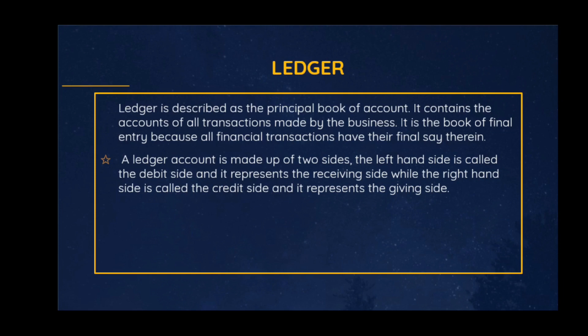A ledger is described as the principal book of account because it contains the account of all transactions made by the business. It is the book of final entry because all financial transactions are finally recorded in the ledger. In the ledger there are two sides: the debit side on the left, and the credit side on the right. The debit side is the receiving side, and the credit side is the giving side.